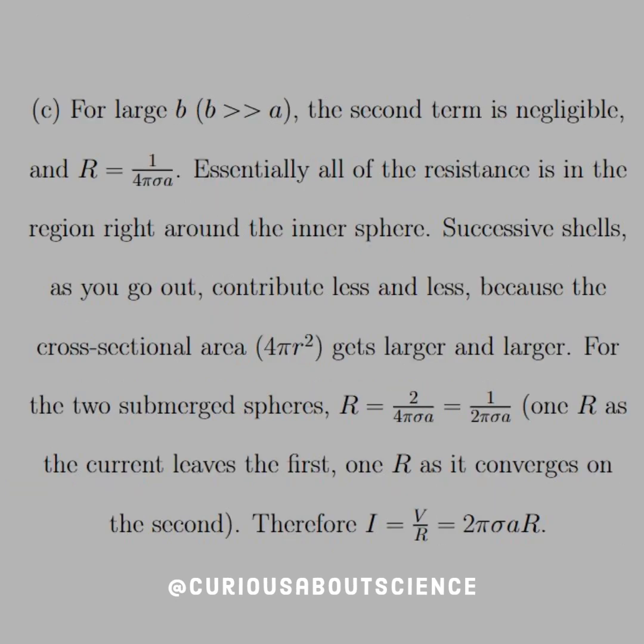But for Part C, for large B, where B is much, much greater than A, the second term is negligible. Clearly, we could see as B gets very big, 1 over A minus 1 over B, well, that 1 over B will go to 0, and then you're just left with 1 over A. So hence, we see that R is equal to 1 over 4 pi sigma A. Essentially, all the resistance is in the region right around the inner sphere, because that's where the charge is.